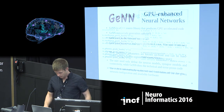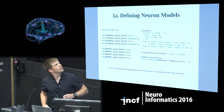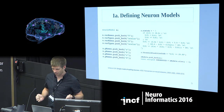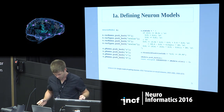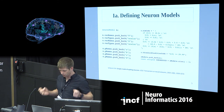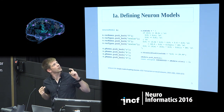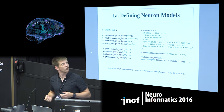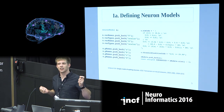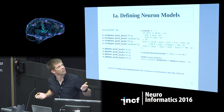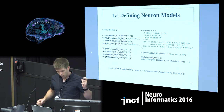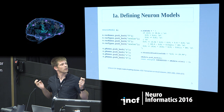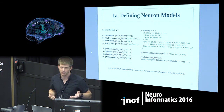I'm going to show you a quick tutorial of how you might define a simple network. First you define your neuron models. You define your variables — the type of each variable, so either a real number or an integer — and you define your parameters and your simulation code for your neuron model as a C++ string. You also define the threshold condition, which is the condition that must be met for a spike to be propagated.